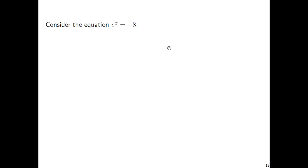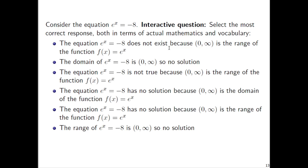Consider the equation e to the x equals negative 8 as your interactive question. Select the most correct response, both in terms of the actual mathematics and vocabulary. Options include: the equation does not exist because 0 to infinity is the range of f of x equals e to the x; the domain of e to the x equals negative 8 is 0 to infinity so no solution; the equation is not true because 0 to infinity is the range; the equation has no solution because 0 to infinity is the domain of f of x equals e to the x; or the equation has no solution because 0 to infinity is the range of f of x equals e to the x. Some of these are factually incorrect, some have the right idea but wonky language — look at these carefully and select the correct response.